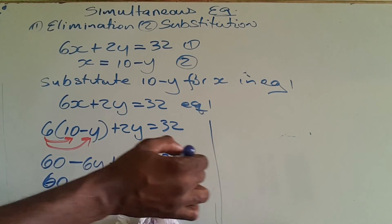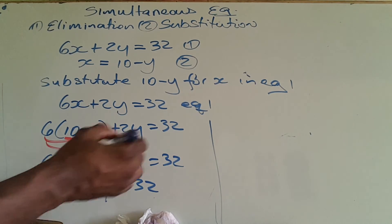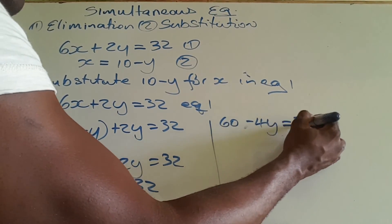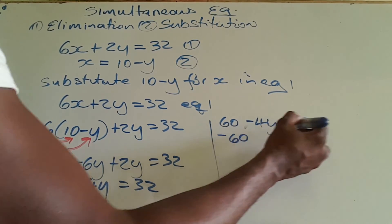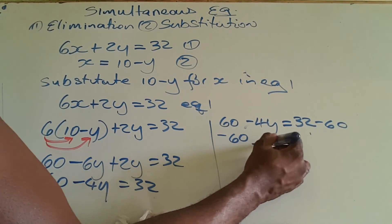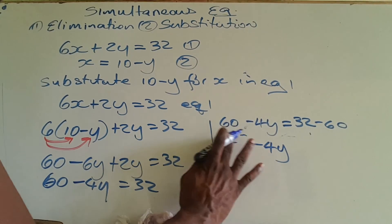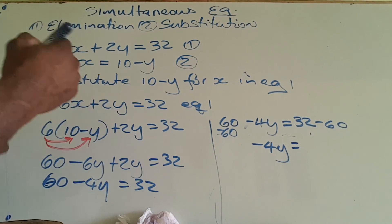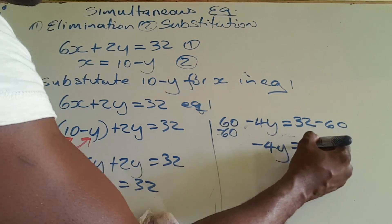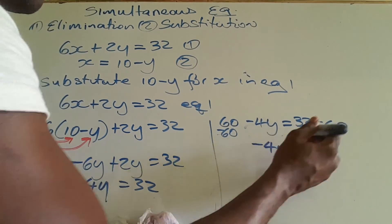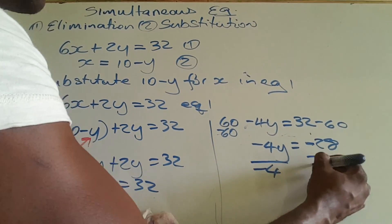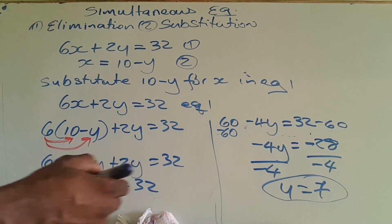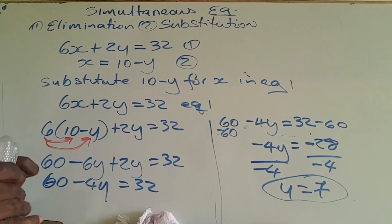Collecting the like terms: negative 6y plus 2y is negative 4y, giving 60 minus 4y equals 32. Subtracting 60 from both sides gives negative 4y equals negative 28. Dividing by negative 4, y equals positive 7. That's my first response for this problem.